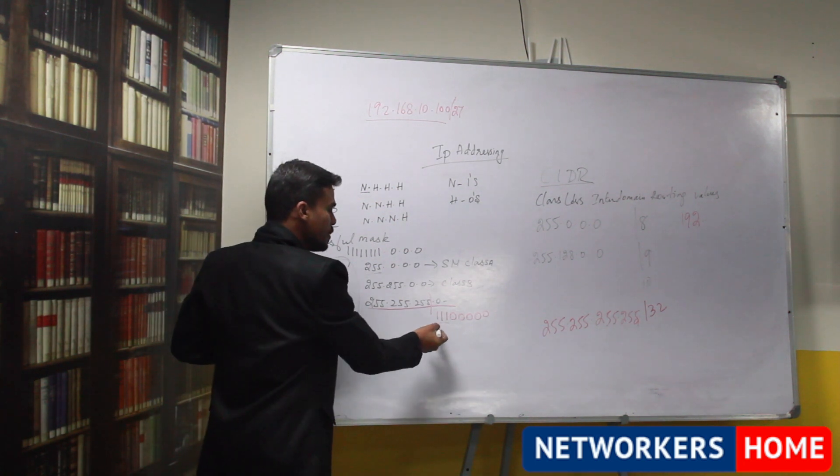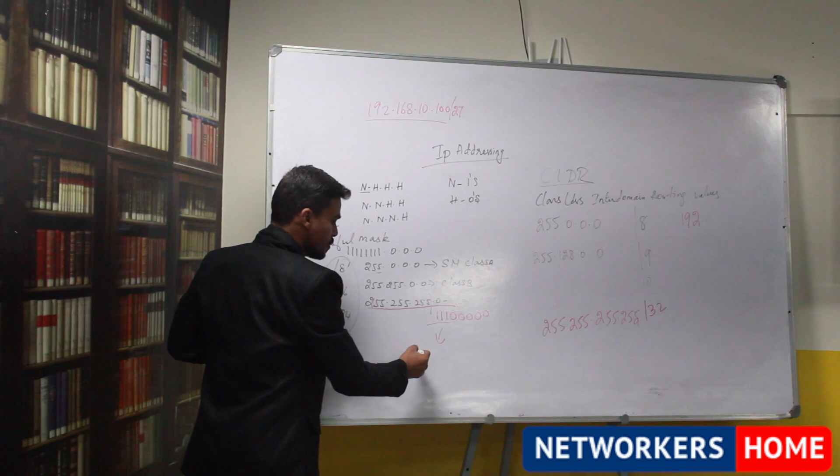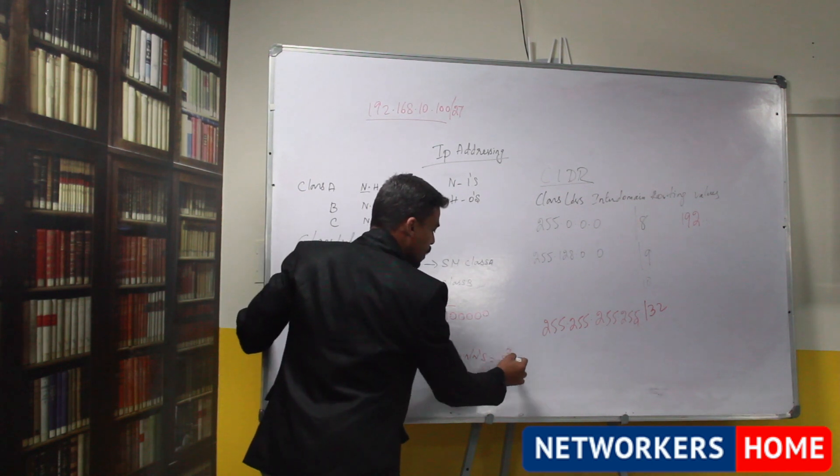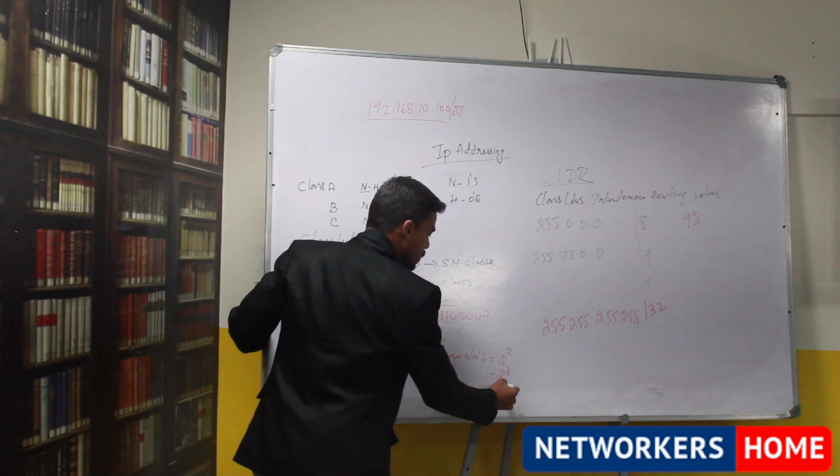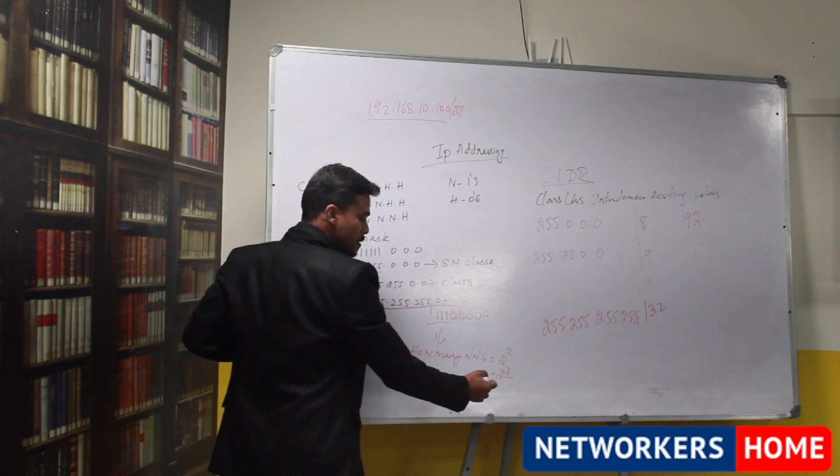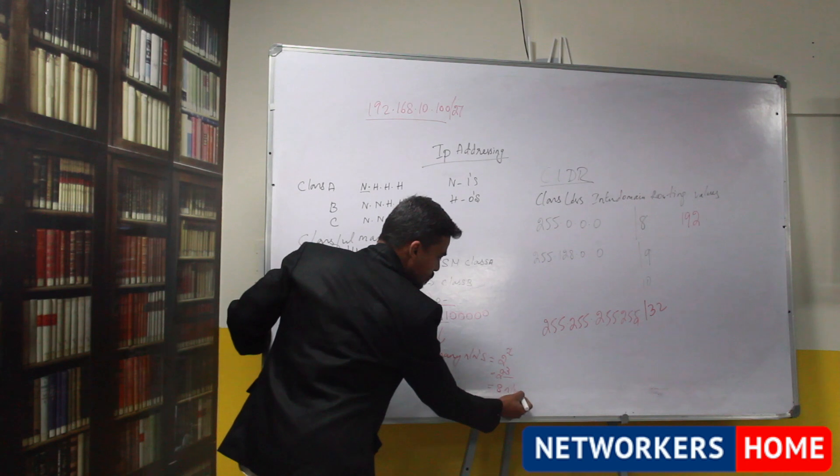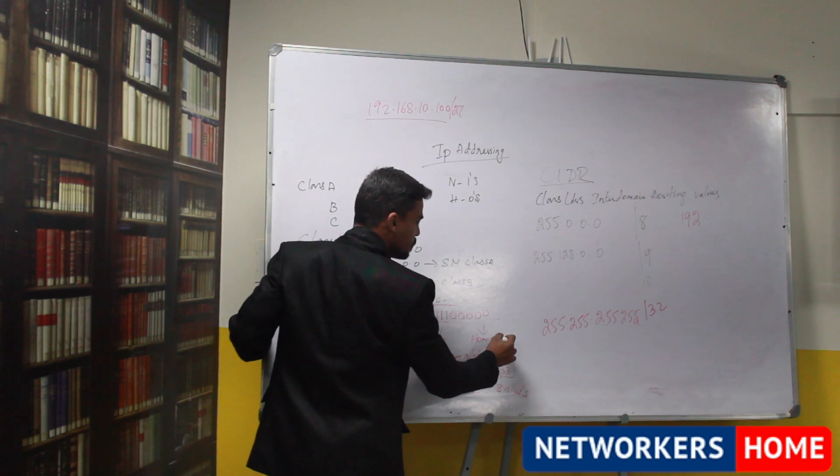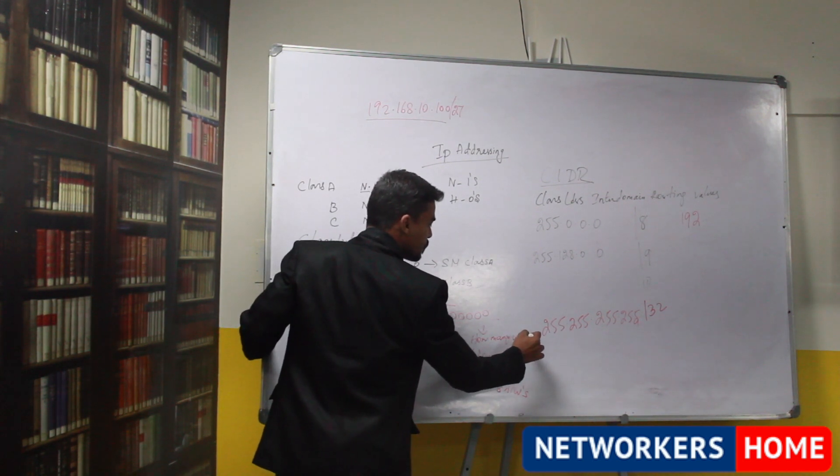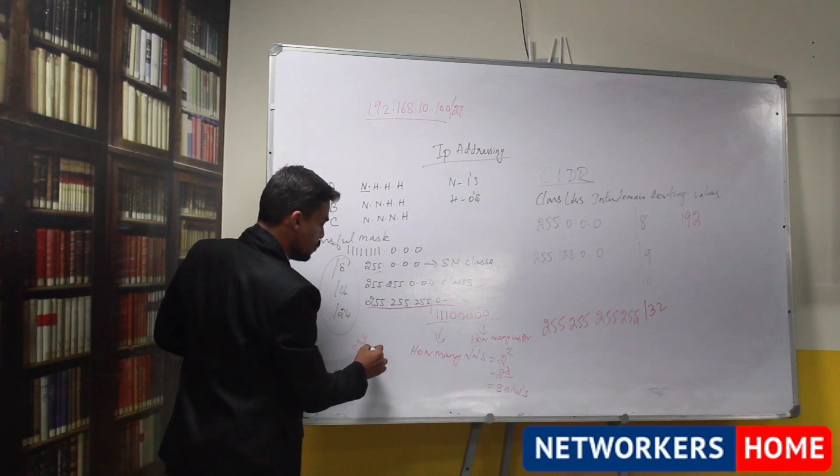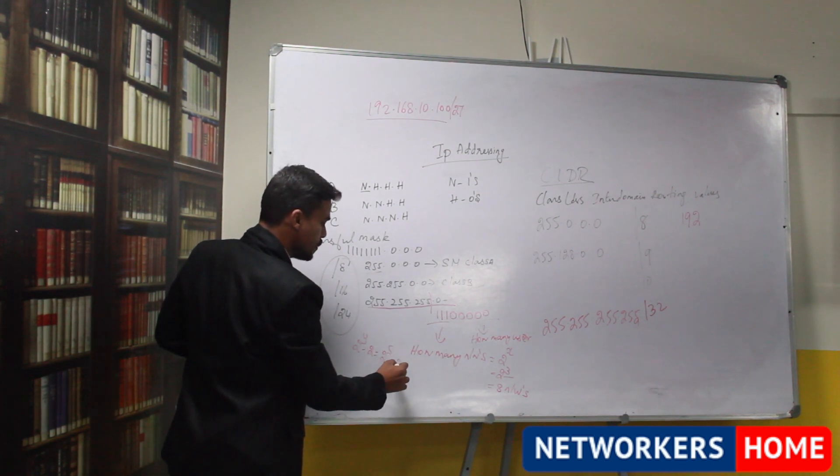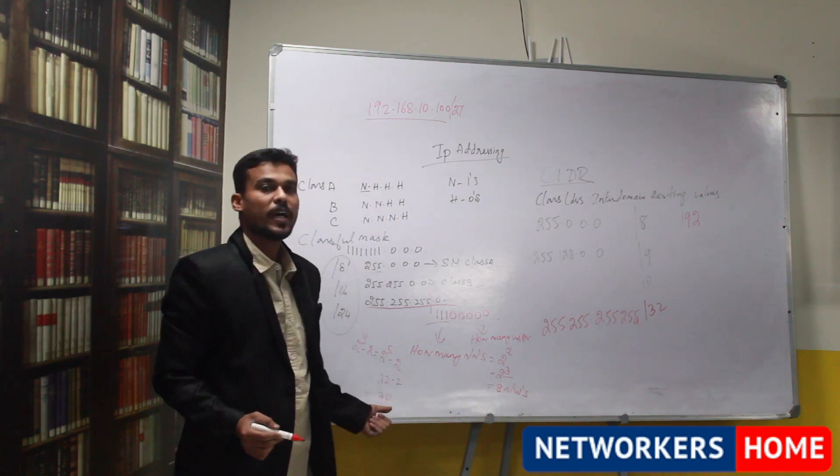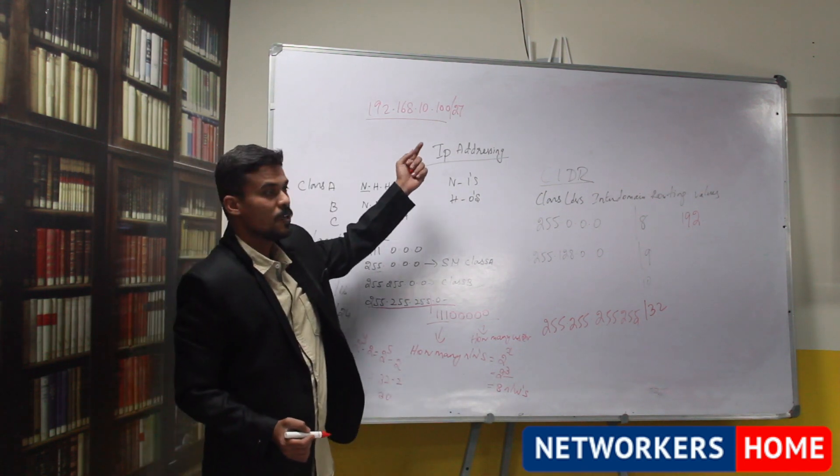The borrowed network bits will let you know about how many number of networks. 2 power x is the formula where you can find the number of networks as 2 power 3, this 3 is nothing but your borrowed bits. So you can get 8 networks. This 0s gives how many number of user per network, 2 power y minus 2, 2 power 5 minus 2 is 32 minus 2, 30. So I have 8 networks, each network carries 30 users based on slash 27 values.